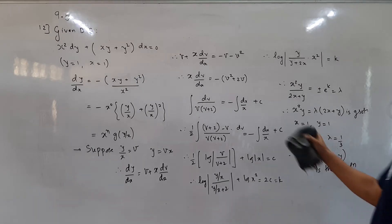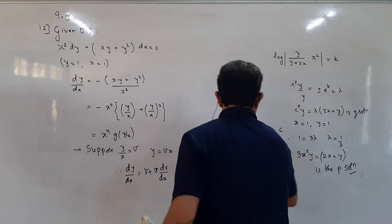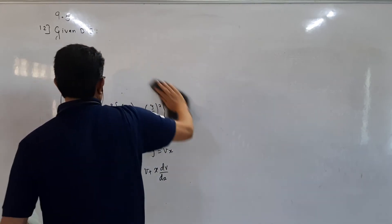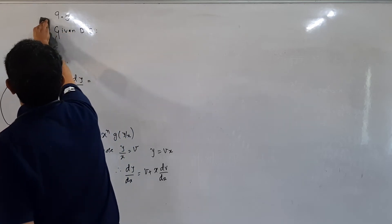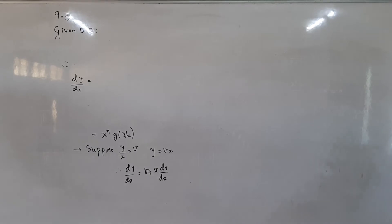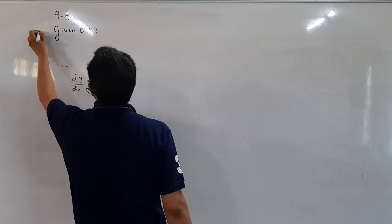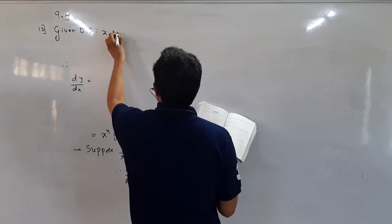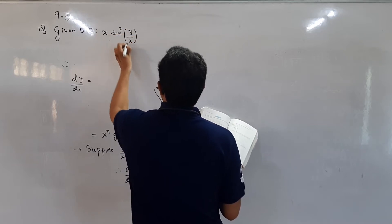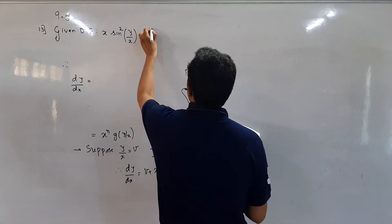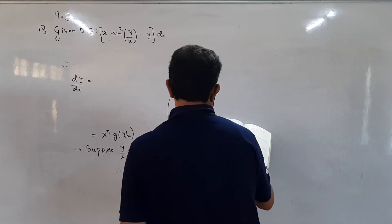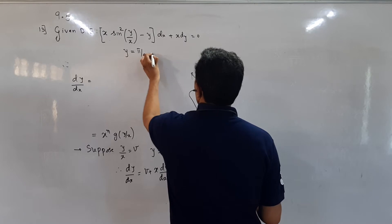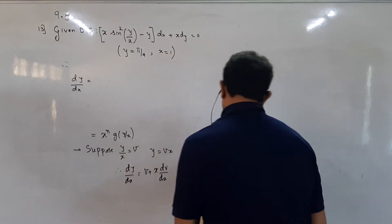Okay students, now we are doing sum number 13. The given differential equation is x sine squared(y/x) minus y times dx plus x dy equals 0. The initial condition is: when x is 1, y is pi/4.